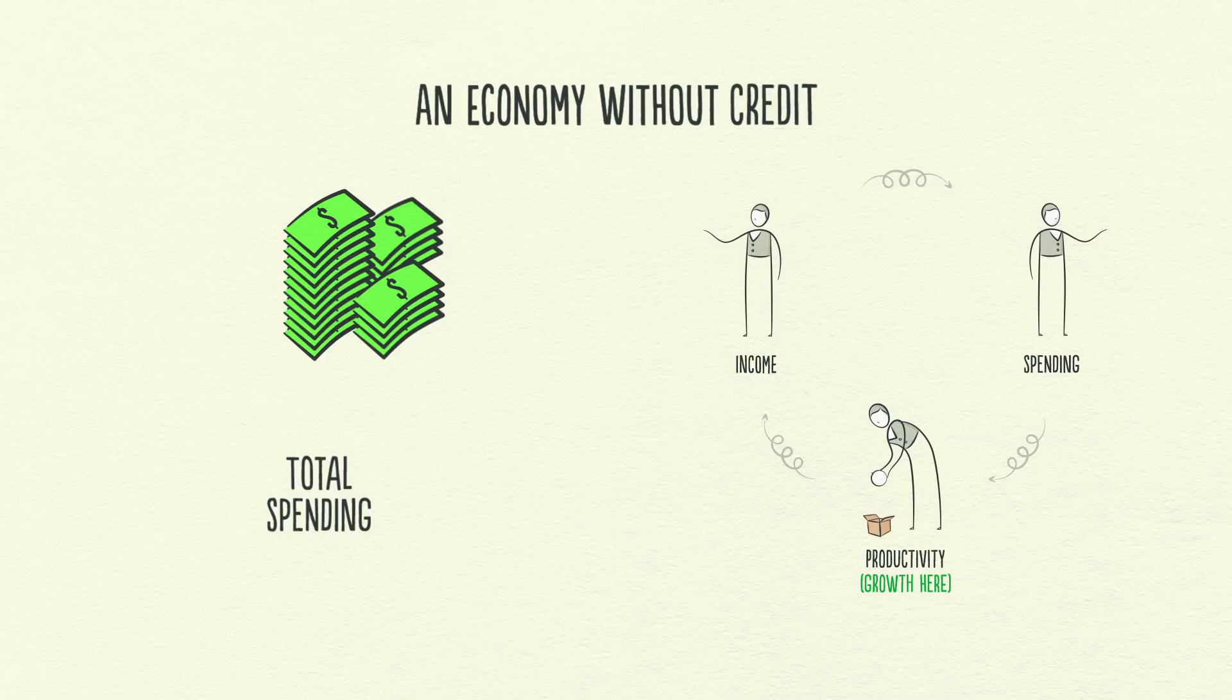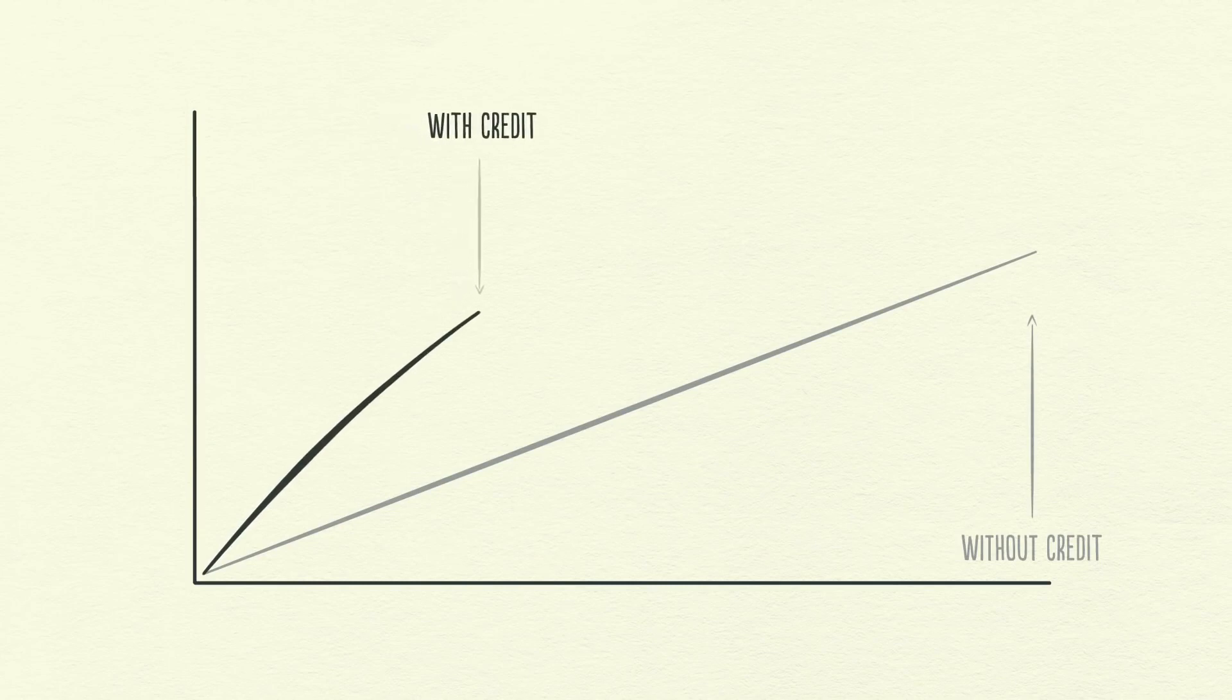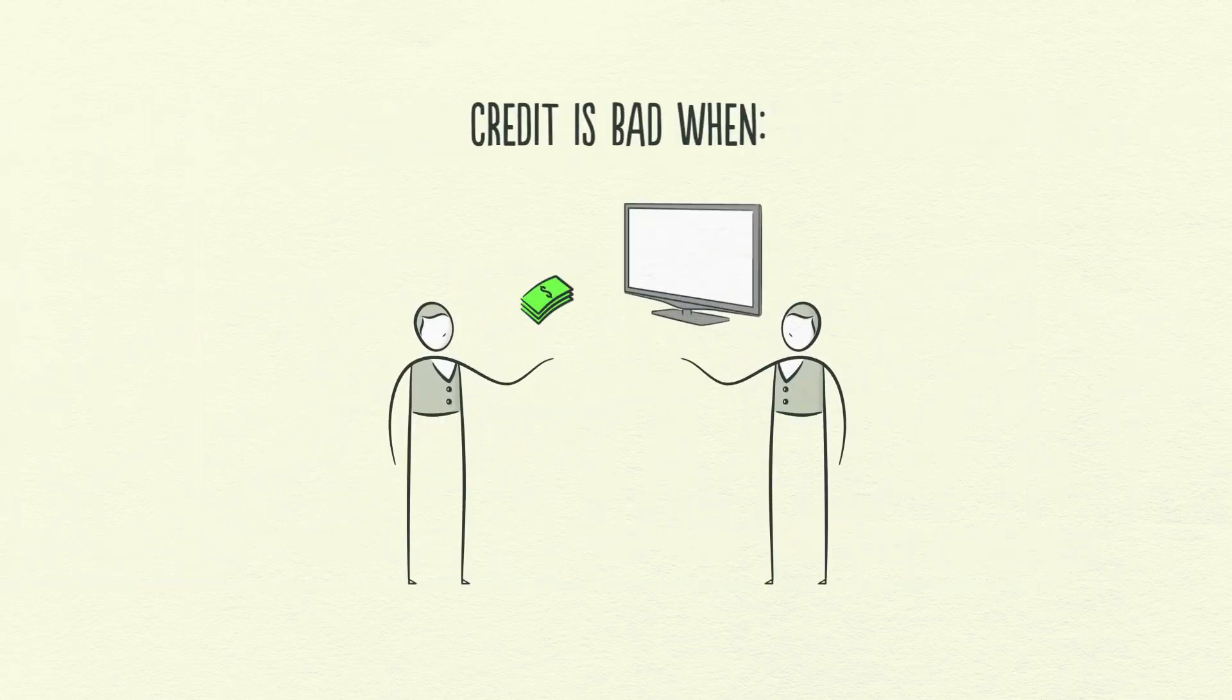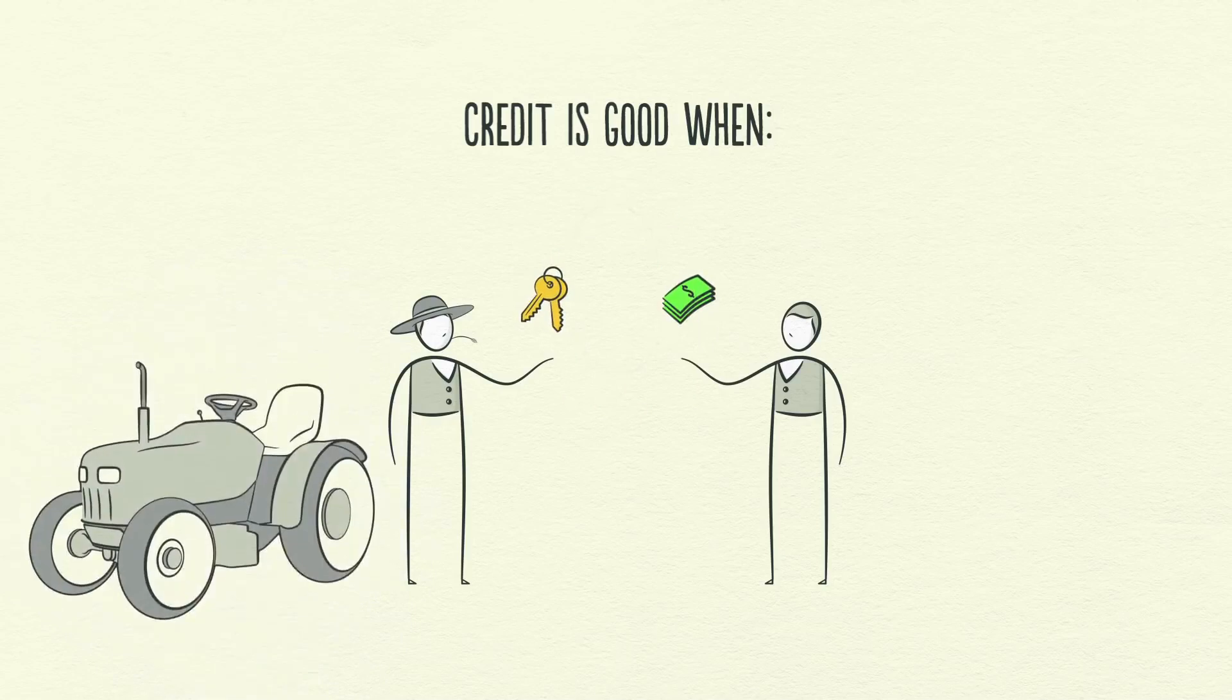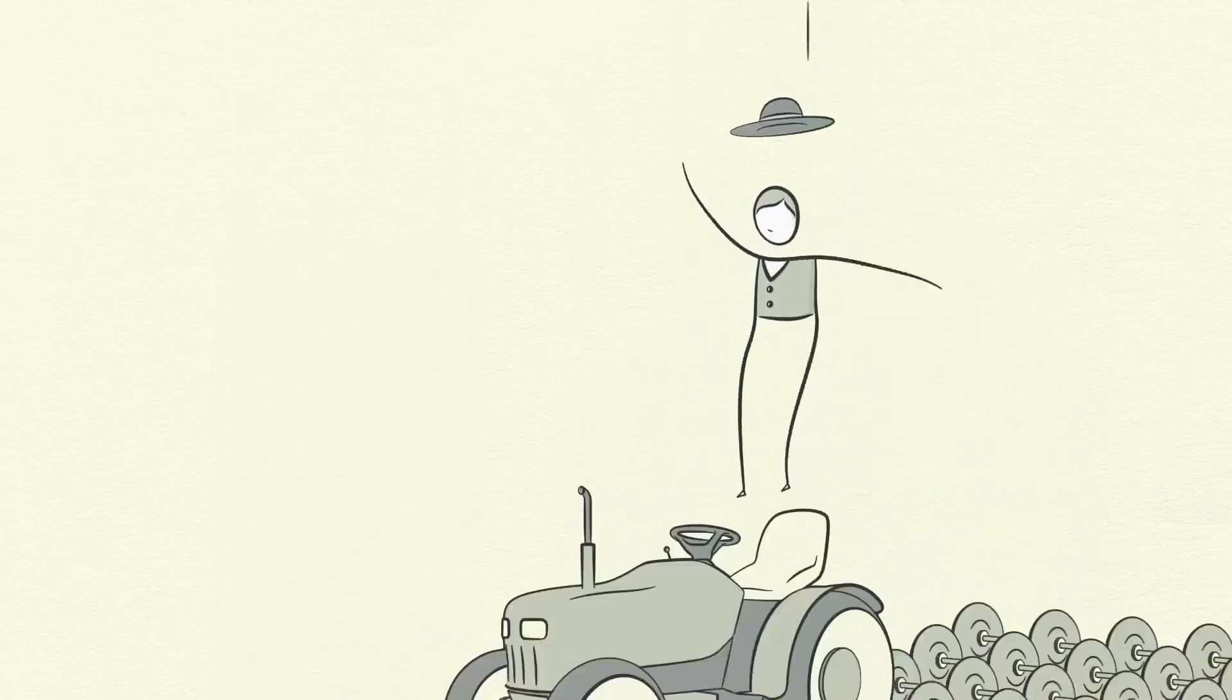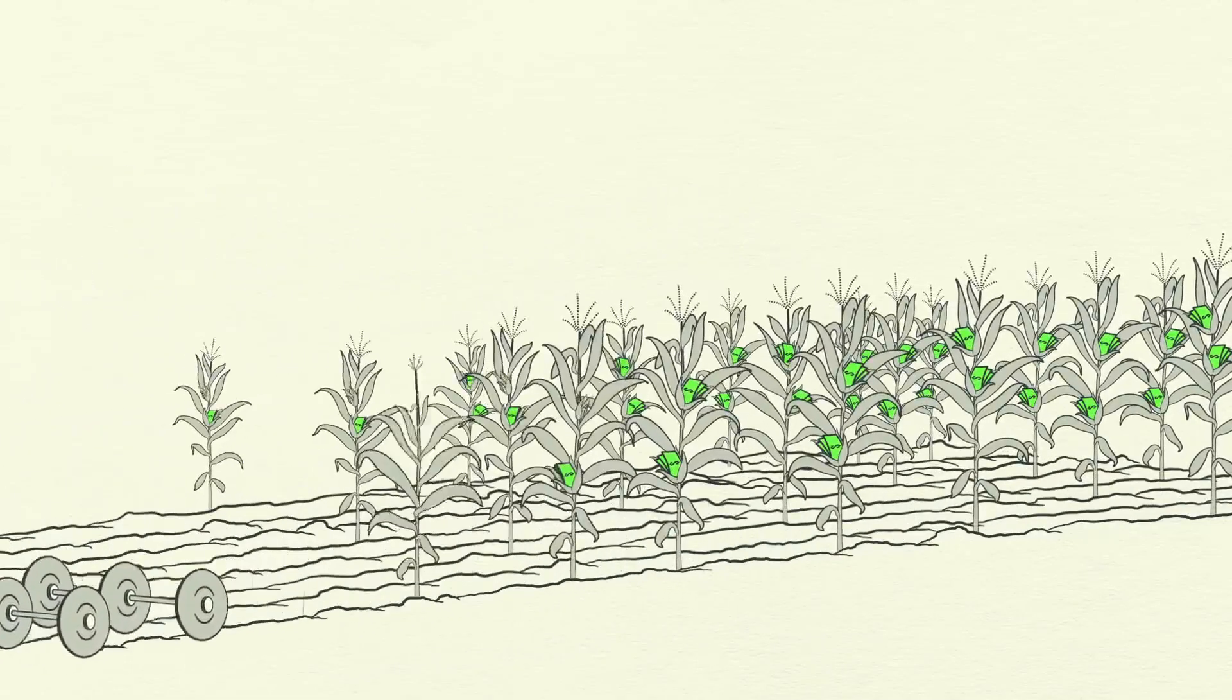Remember, in an economy without credit, the only way to increase your spending is to produce more. But in an economy with credit, you can also increase your spending by borrowing. As a result, an economy with credit has more spending and allows incomes to rise faster than productivity over the short run, but not over the long run. Now, don't get me wrong. Credit isn't necessarily something bad that just causes cycles. It's bad when it finances overconsumption that can't be paid back. However, it's good when it efficiently allocates resources and produces income so you can pay back the debt. For example, if you borrow money to buy a big TV, it doesn't generate income for you to pay back the debt. But if you borrow money to buy a tractor, and that tractor lets you harvest more crops and earn more money, then you can pay back your debt and improve your living standards.